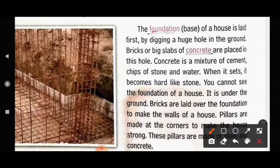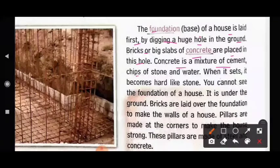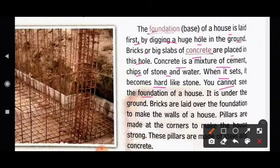The foundation or base of a house is laid first by digging a huge hole in the ground. Bricks or big slabs of concrete are placed in this hole. Concrete is a mixture of cement, chips of stone and water. When it sets, it becomes hard like a stone. You cannot see the foundation of a house — it is under the ground. Bricks are laid over the foundation to make the walls of a house.